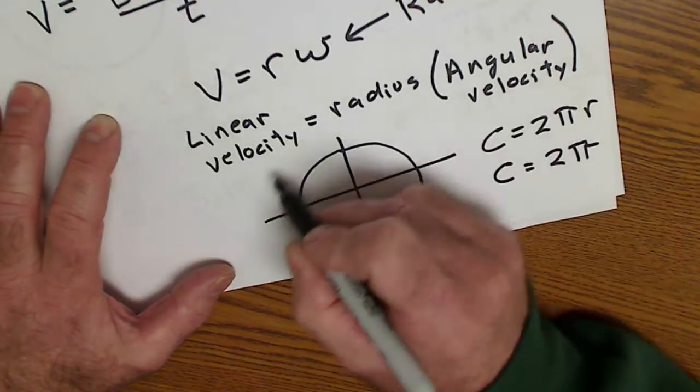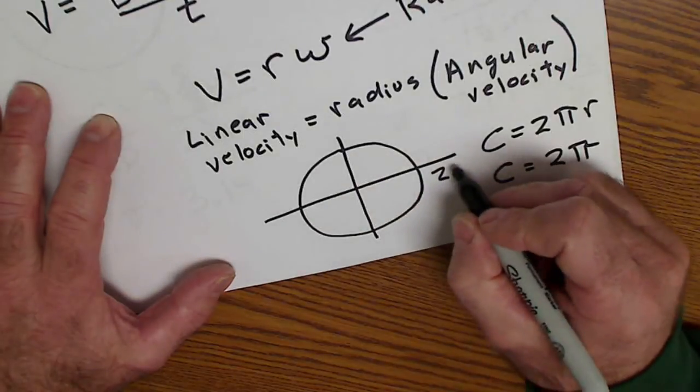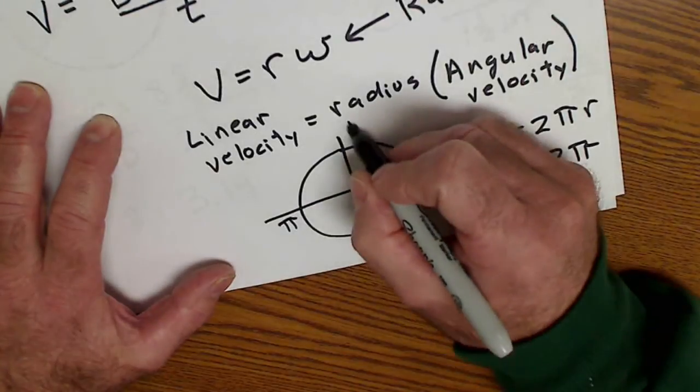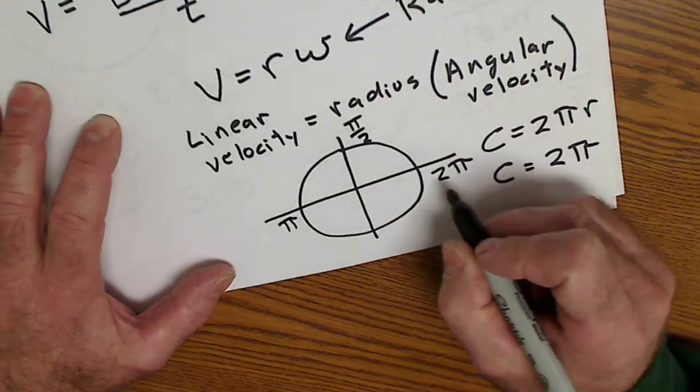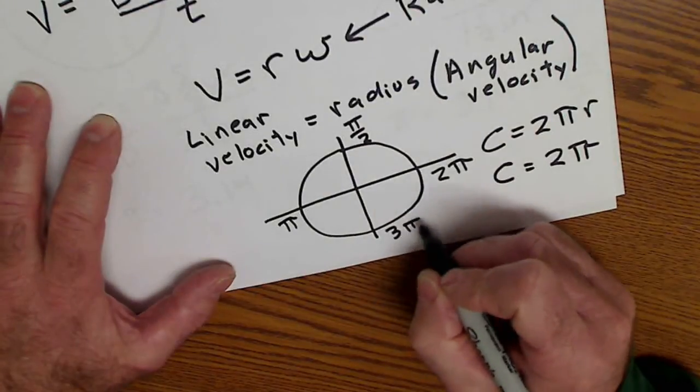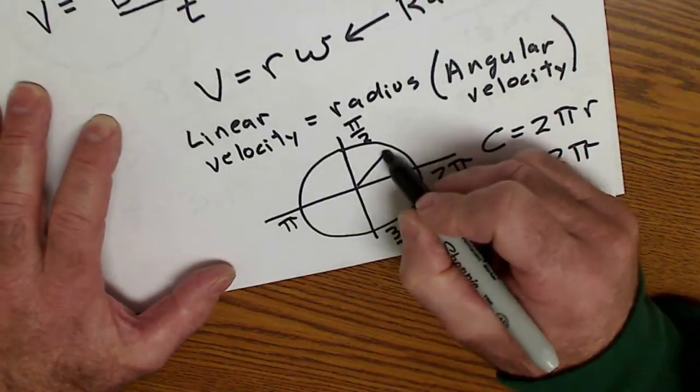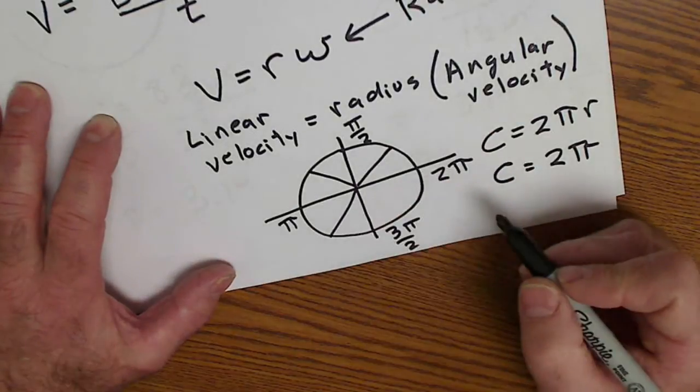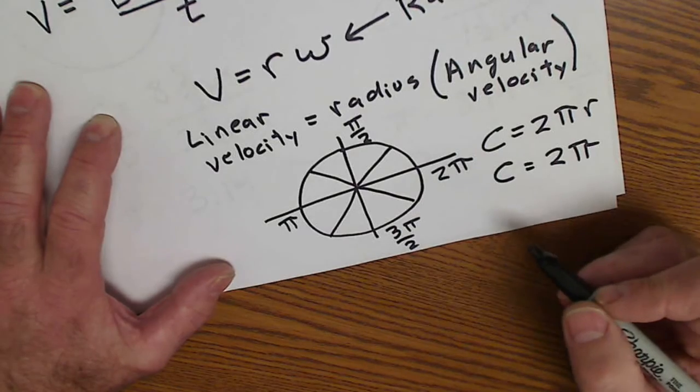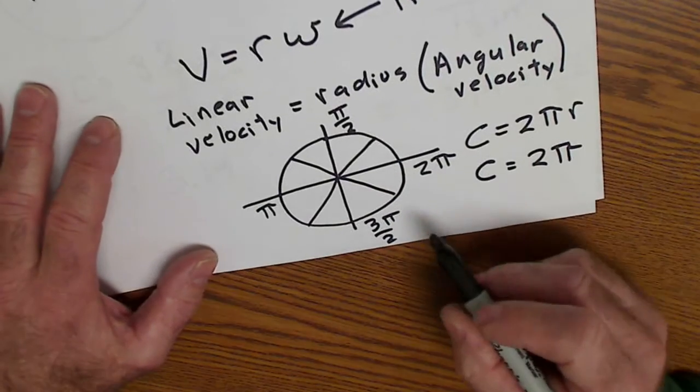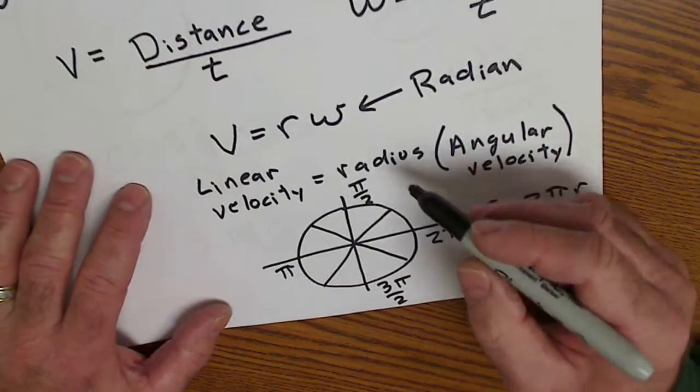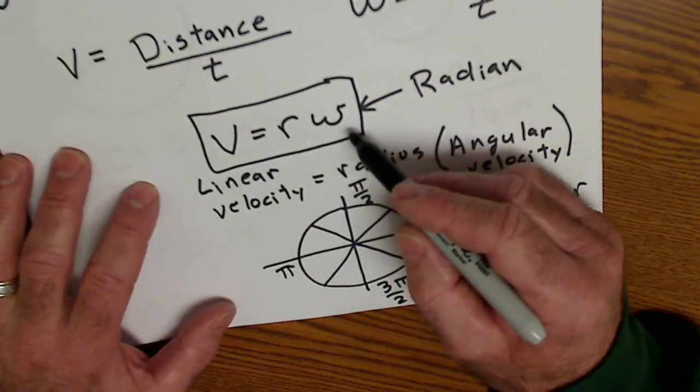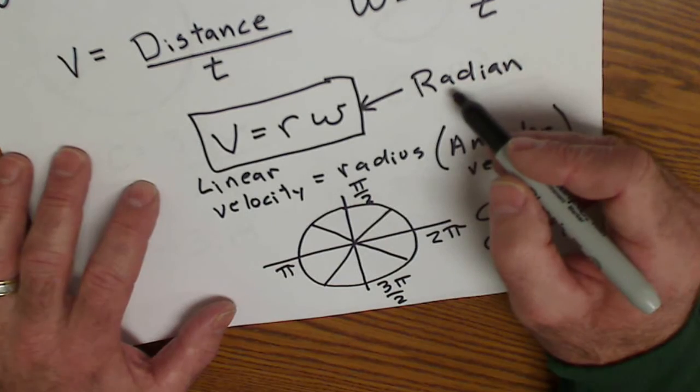So I start here, rotate all the way around, that would be two pi. Halfway around would be pi. Quarter would be pi over two, and three pi over two. I can split it here into pi over four, three pi over four, five pi over four, seven pi over four. The important thing to note here is that this equation, linear velocity equals radius times angular velocity, only works if you're in radian measure.